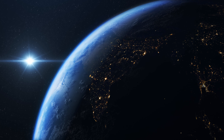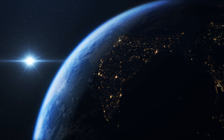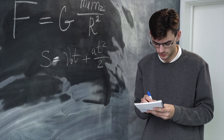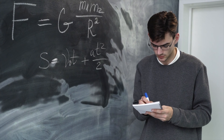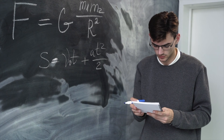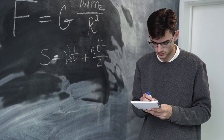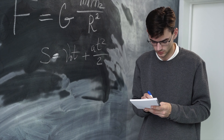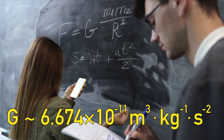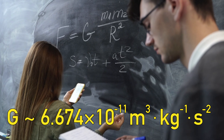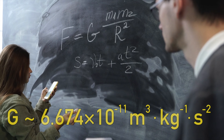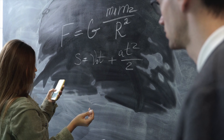Our second constant is the gravitational constant, usually represented by the uppercase letter G. In classical mechanics, it is the constant connecting the gravitational force between two objects with the product of their masses and the inverse square of their distance. Its value is about 6.674 × 10⁻¹¹ cubic meters per kilogram per square second. It is used in astrophysics to approximate the orbits of planets, for example.